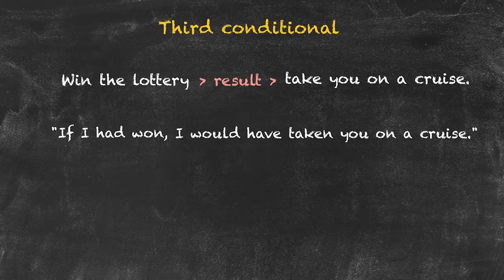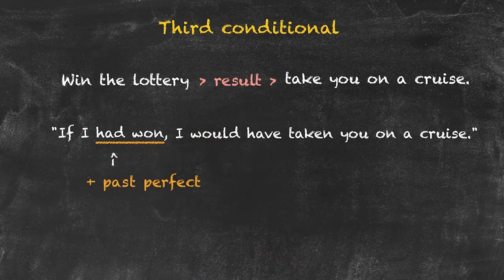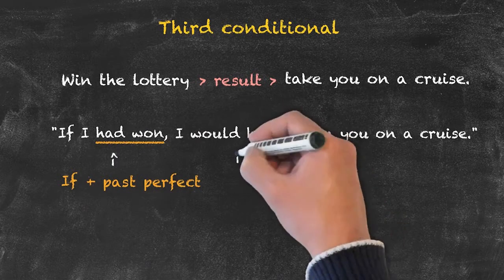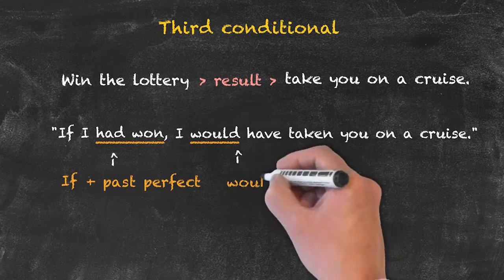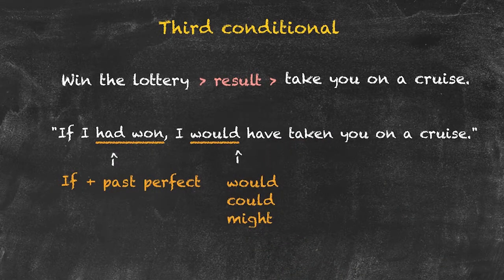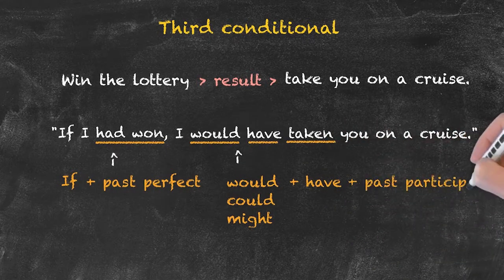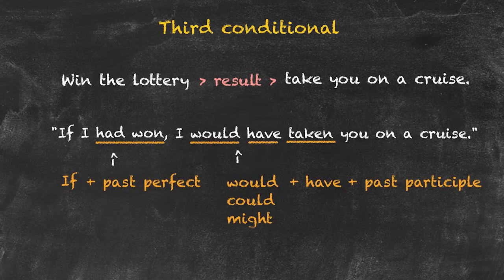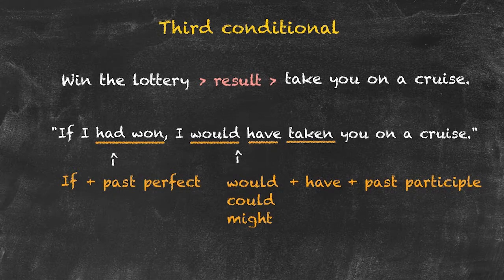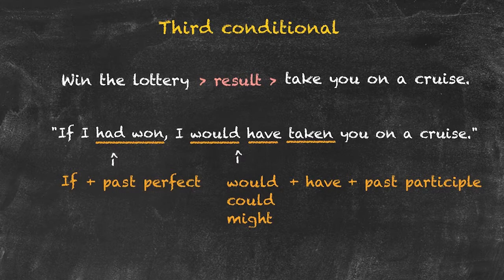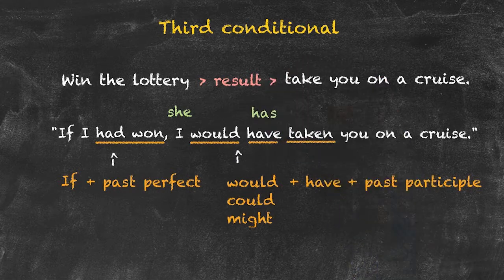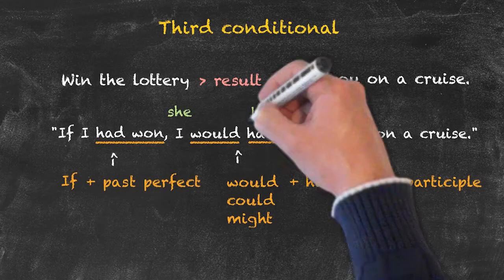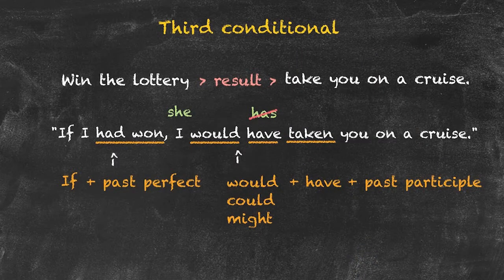Let's have a look at the structure of this conditional. 'If I had won' — we're looking at a past perfect clause — 'would have taken you on a cruise.' 'Would' could be substituted with 'could' or 'might'; 'taken' is a past participle. Students often ask why this is not the present perfect. Without a modal, 'I have taken you' is typical present perfect. However, by introducing the modal, 'have' is always used regardless of the pronoun — so 'she would have taken you' rather than 'she has taken you.'